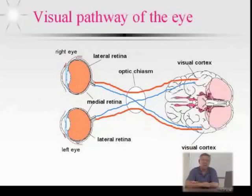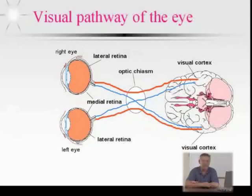The retina is divided into a lateral retina and a medial retina. For example, the right eye — the lateral retina signals actually end up going directly to the right side of our brain. The lateral retina of the left eye also goes directly to the brain, but it goes to the left side of the brain.